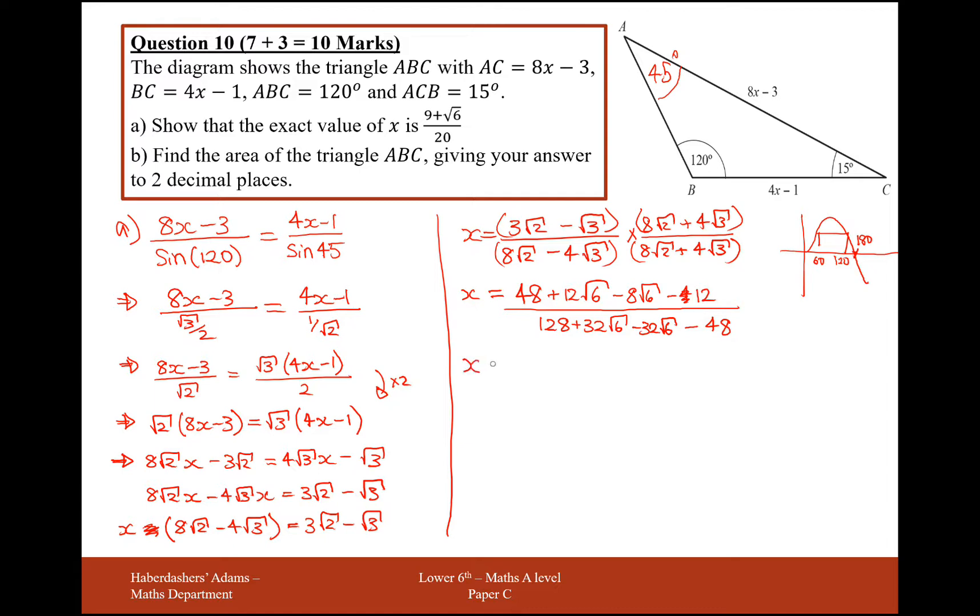So it's going to be x over, so 48 take away 12, that's going to be 36, minus 12 root 6 minus 8 root 6, so that's going to be 4 root 6. So plus 4 root 6. Over 128 minus 48, so that's going to be over 80. And then simplifying down by cancelling out 4s from top and bottom, we get 9 plus root 6 over 20.